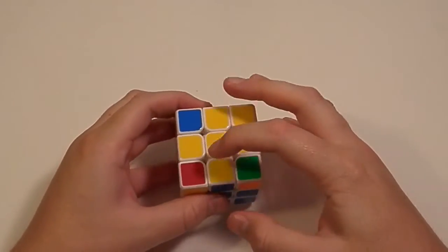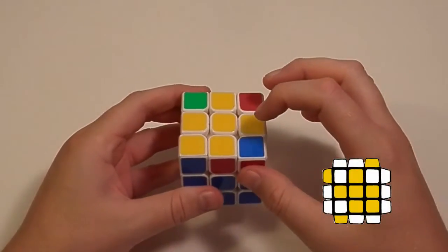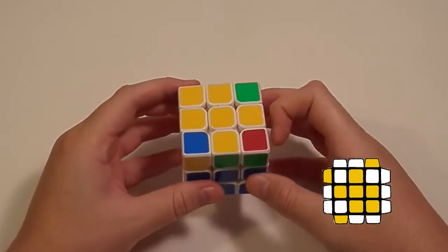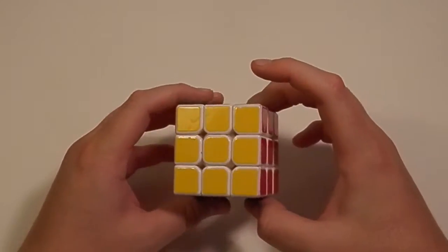Now, if you have the cross and one corner oriented like this, but this isn't the same as your top color, you know it's going to be Anti-Sune. So these are really easy to recognize. Now let's get into the algorithms.